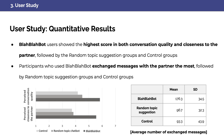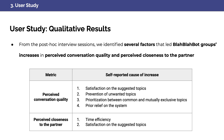After the user study, we identified that BlaBlaBot showed the highest score in both conversation quality and closeness to the partner. Plus, BlaBlaBot groups exchanged the most messages during the conversation. From the post-talk interview, we identified the causes of increase in such qualities: specifically, satisfaction on the suggested topics, prevention of unwanted topics, prioritization between common and mutually exclusive topics, and prior relief on the system are reported to make participants perceive conversation quality as high. Similarly, time efficiency and satisfaction on the suggested topics are attributed to high perceived closeness to the partner.